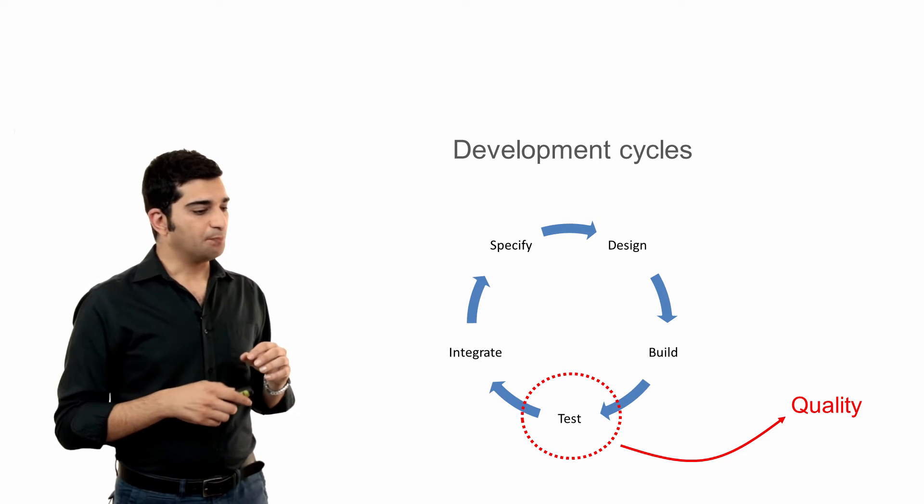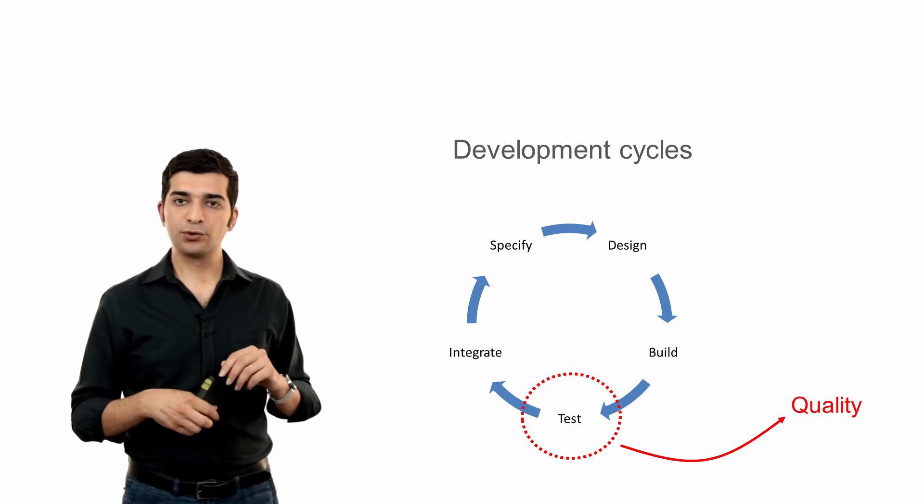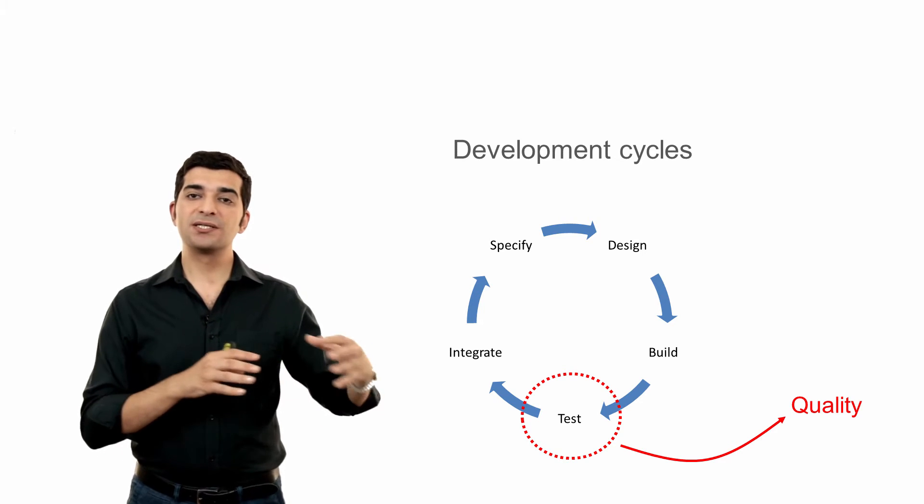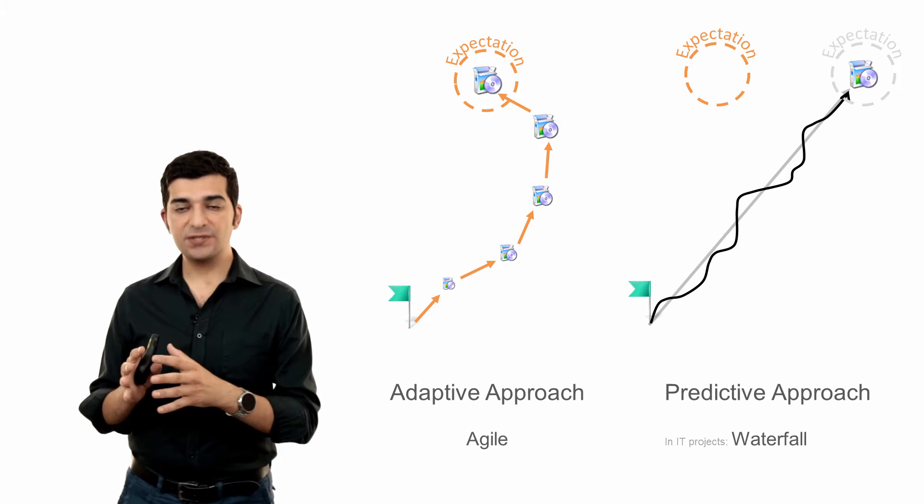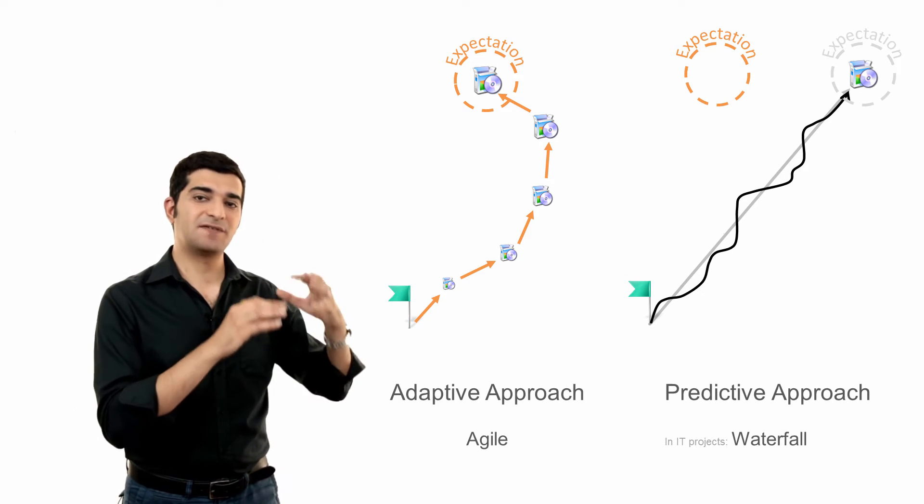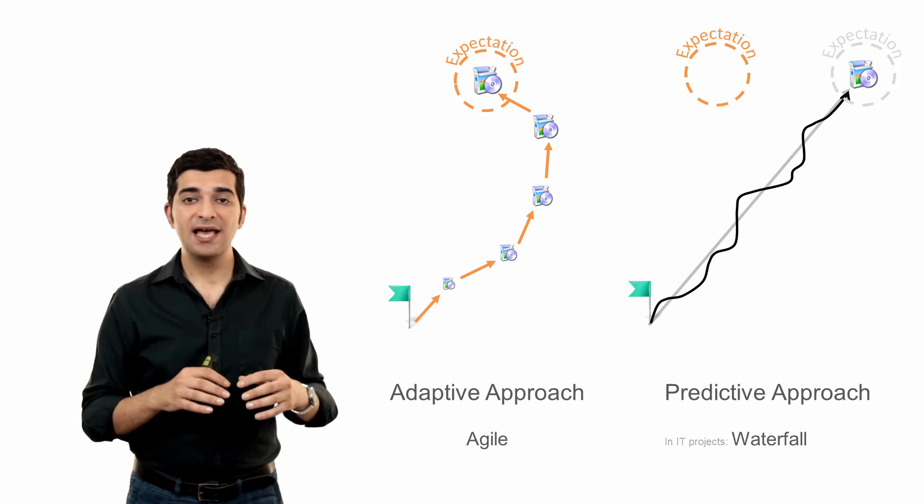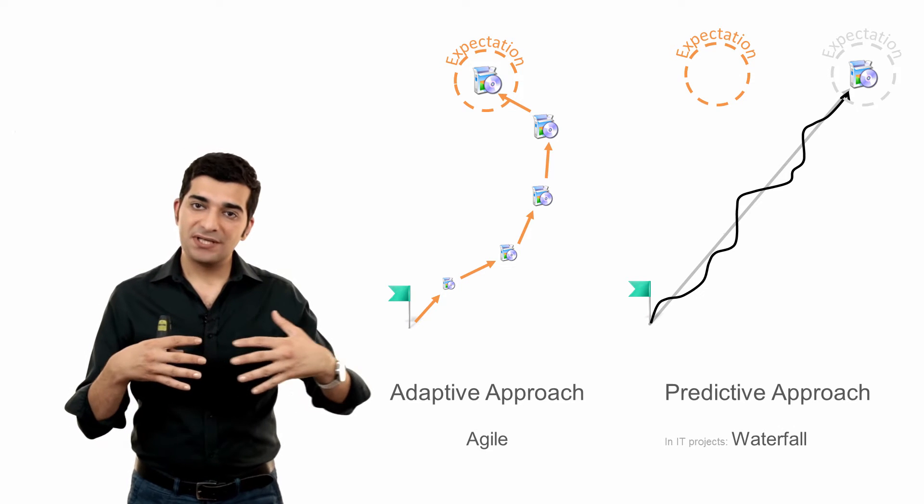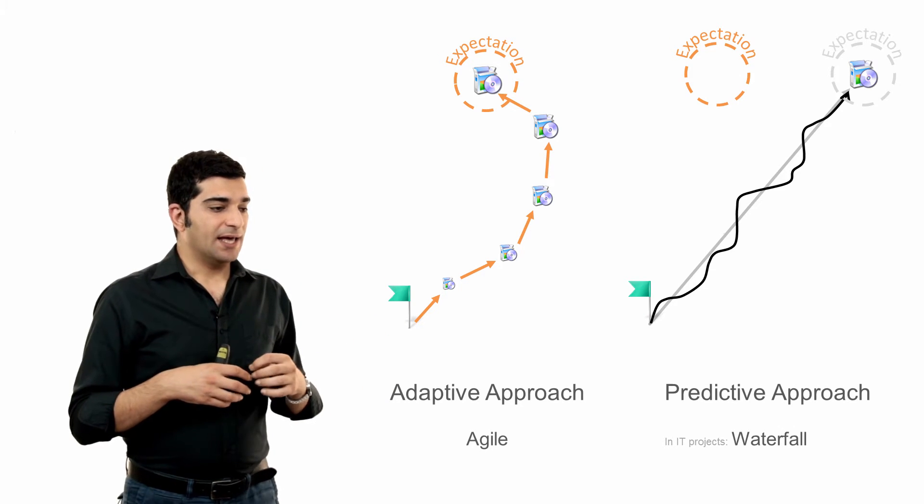So in predictive approaches we run the processes one after the other. First we specify everything and then we design everything and then build everything and test and integrate. There might be some overlaps, but they are sequential in nature.